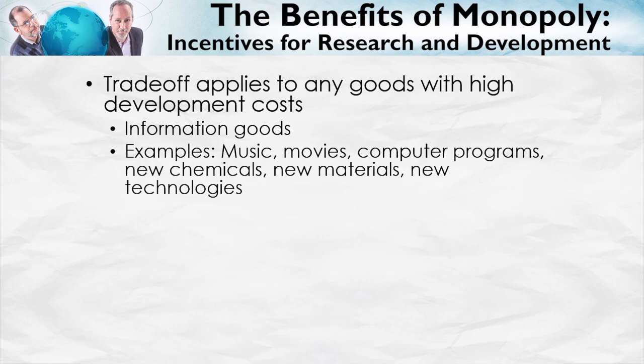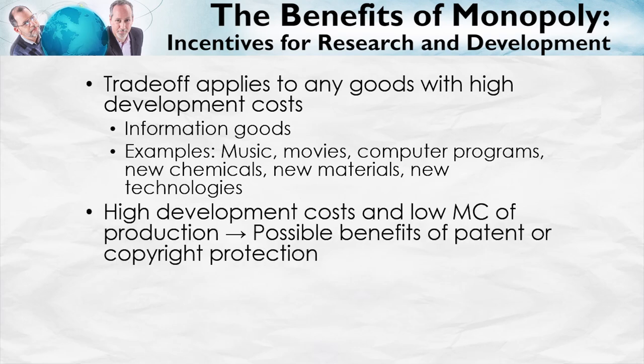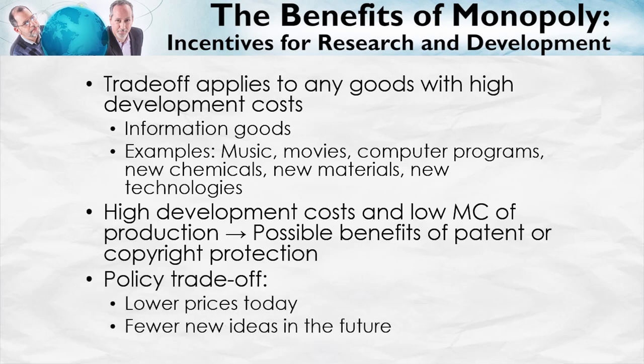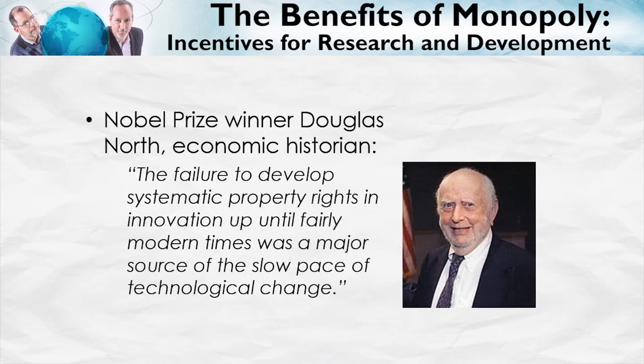Information goods — goods like music, movies, computer programs, new chemicals, new materials, new technologies — typically have high development costs and low marginal costs of production, which suggests there may be possible benefits to patent or copyright protection. More generally, for these types of goods there's a policy trade-off to keep in mind: lower prices today may generate fewer new ideas in the future. Nobel Prize-winning economic historian Douglas North argued that the failure to develop systematic property rights in innovation up until fairly modern times was a major source of the slow pace of technological change.